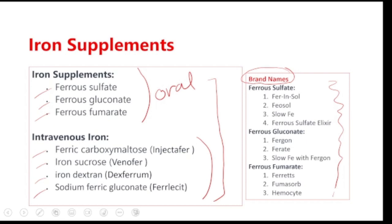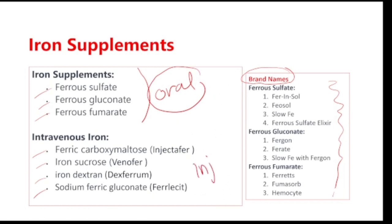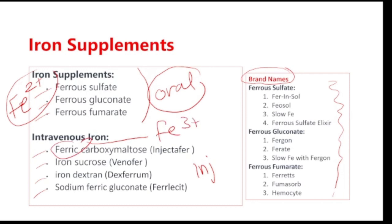For iron supplements, we have oral or injectable products. For the oral route, we have ferrous sulfate, ferrous gluconate, and ferrous fumarate — these are Fe2+. Then we have ferric forms, Fe3+, including ferric carboxymaltose, iron sucrose, iron dextran, and sodium ferric gluconate. There are brand names used during clinical practice.